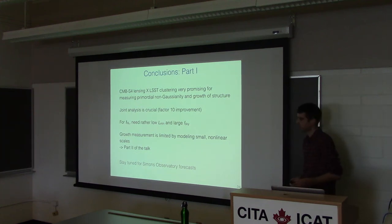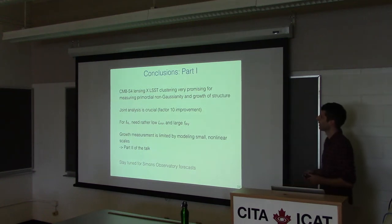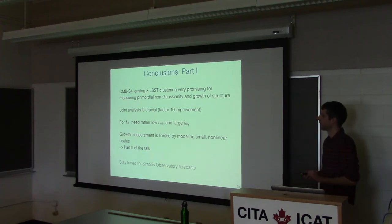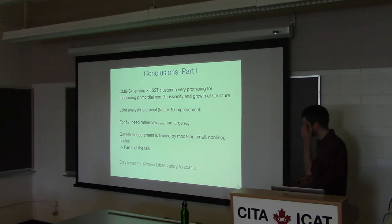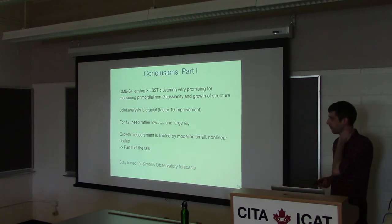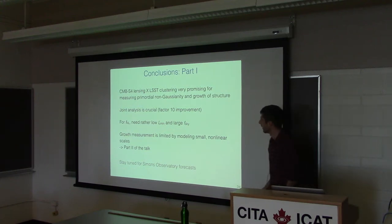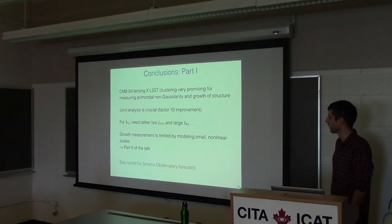To conclude the first part: CMB-S4 lensing cross-correlated with LSST clustering is very promising, especially for measuring primordial non-Gaussianity and matter amplitude as a function of redshift. The joint analysis is crucial — we get a factor of ten improvement if we include CMB lensing compared to having no CMB lensing. The main challenges are needing large scales for FNL and better models on small scales for sigma 8.